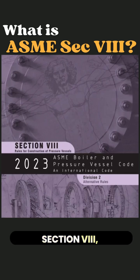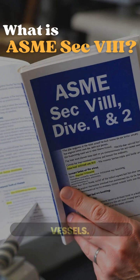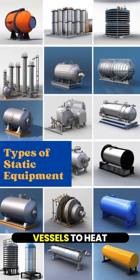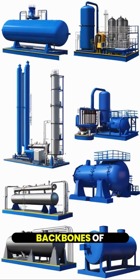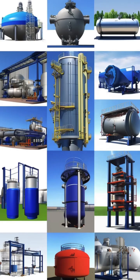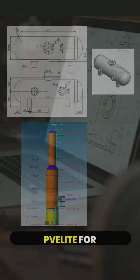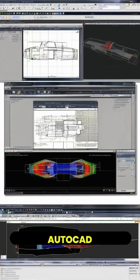ASME Section 8 Divisions 1 and 2 outlines the standards for the design, construction, and inspection of pressure vessels. From pressure vessels to heat exchangers, these are the backbones of industrial processes. PV Elite is used for calculations and AutoCAD for drafting — essential tools for every engineer.